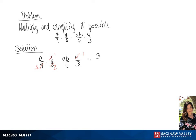Now we have a over 3 times 1 half times ab over 6 times 1 over 3. And if we multiply across, we get the answer of a squared b over 108.